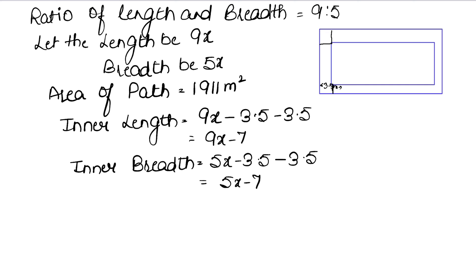Now we'll find the areas. Outer area equals length times breadth. The outer length was 9x and breadth was 5x, so 9x times 5x equals 45x². Similarly for inner area, which we're calculating because we need to apply the area of path formula, which is outer area minus inner area.